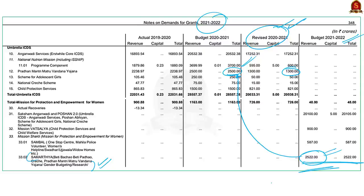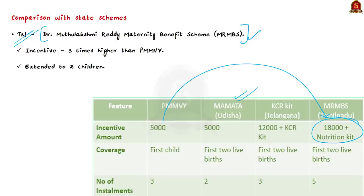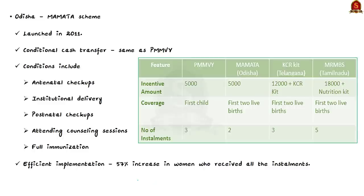The author suggests the central government learn from state governments, whose maternity benefit schemes perform much better. The first example is Tamil Nadu's Dr. Muthulakshmi Reddy Maternity Benefit Scheme, which provides a maximum incentive of 18,000 rupees — three times higher than PMMVY's 6,000 rupees — and also covers two children, compared to PMMVY's coverage of only the first child. The second example is Odisha's Mamta scheme.